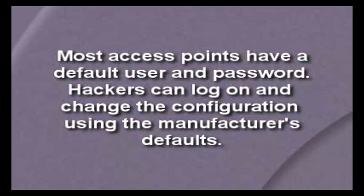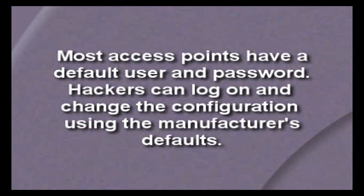The next thing to do is implement password protection on the wireless access point. Most wireless access points allow you to set up a password so you have to authenticate to make any changes to the access point configuration. This is really important because most wireless access points come with a default username and default password — or no password at all. If you don't change that, someone who connects to your network could access the wireless access point configuration utility and change all of your settings to give themselves more access.